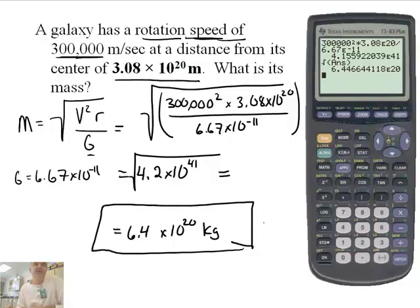Now, that is a big number. And it makes sense that you'd get a big number for the mass of a galaxy. OK? So that's how you solve that problem. So a lot of math on this podcast, isn't there?